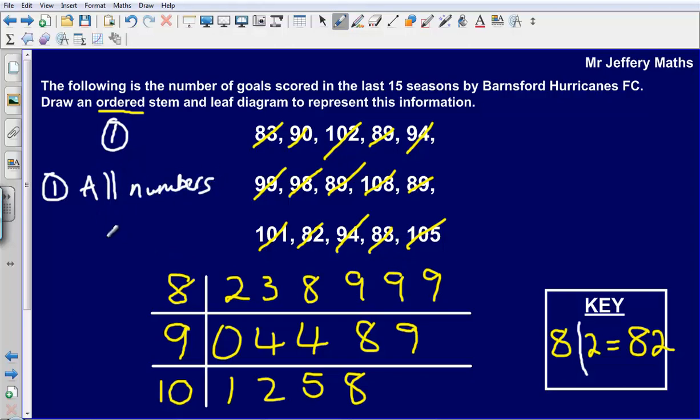And then the third mark just comes from the key, so just drawing this in. Now the one that most people tend to lose their mark on is actually the all numbers present, which kind of seems a bit crazy, but it is just very easy to overlook a number that is in your list.